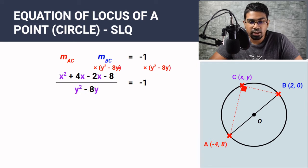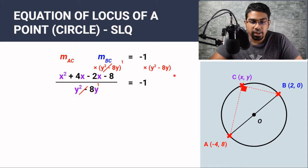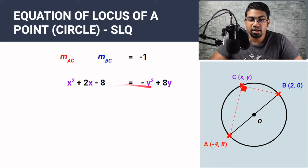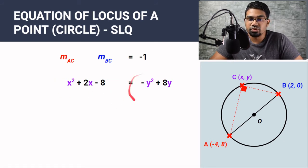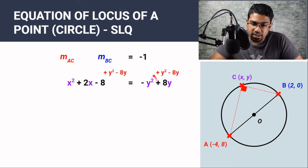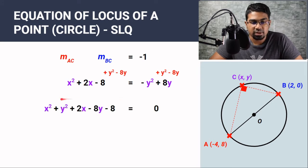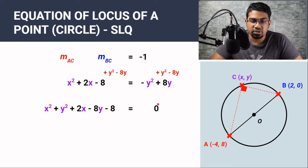We multiply both sides by the denominator (y² − 8y) to get rid of the fraction. The left side eliminates, and the right side gives us −y² + 8y. Simplifying further, we have x² + 2x − 8 on the numerator side. Since the equation of the locus generally has everything on the left equal to 0, we add y² and subtract 8y on both sides. This gives us x² + y² + 2x − 8y − 8 = 0, which is the equation of the locus of point C.